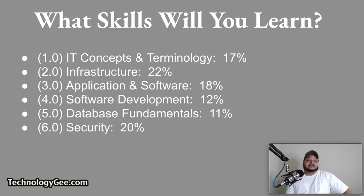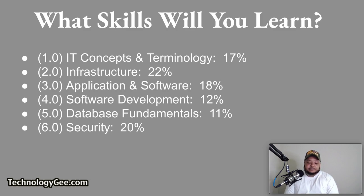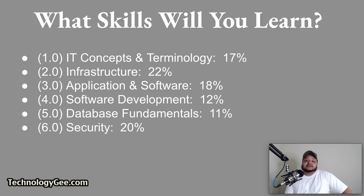Domain number six is going to focus on security, and that will cover 20% of your IT Fundamentals exam. This domain will help you understand a concept known as the CIA triad — not the CIA that's running around being the world police, but CIA stands for confidentiality, integrity, and availability. This will cover those three concepts as they relate to securing devices along with best practice methods.